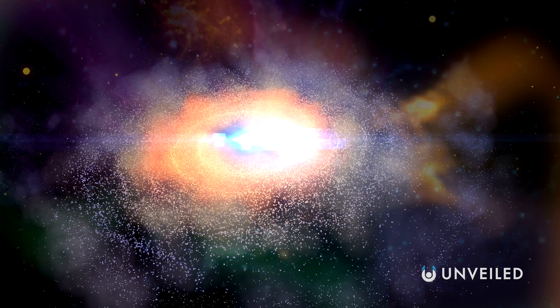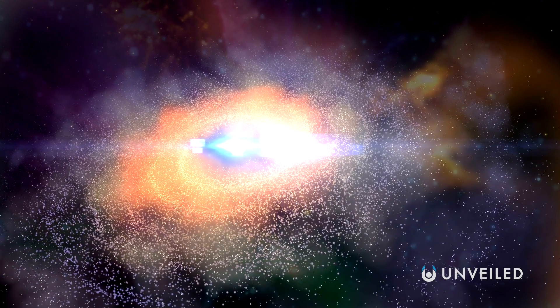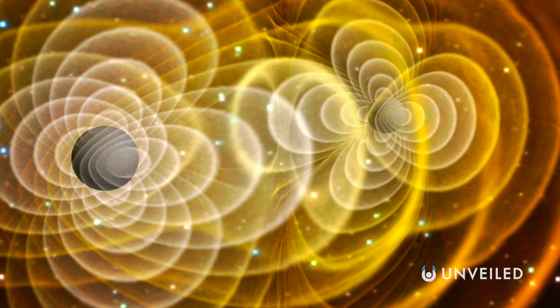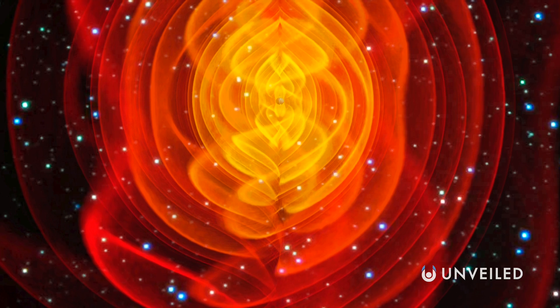Quasars typically only form when a galaxy still has plenty of excess matter at the start of its life, which our galaxy isn't. So if one did show up in our corner of the universe, then it'd be unexpected, to say the least. But there is, theoretically, a way it could happen.